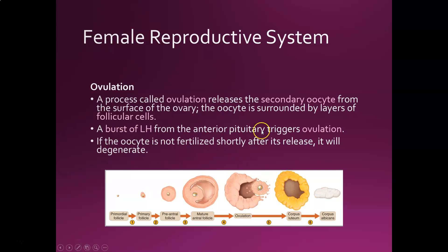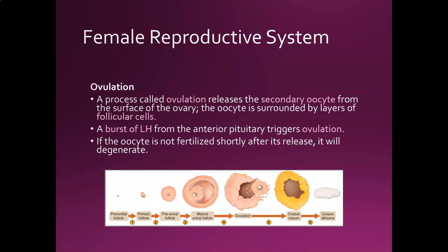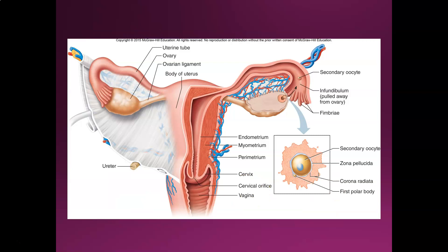A burst of luteinizing hormone from the anterior pituitary triggers ovulation — it's called luteinizing hormone because it causes the formation of the corpus luteum, and 'luteo' means yellow. The oocyte is released and starts traveling down the fallopian tubes. If it's not fertilized shortly after release — really within days — it doesn't remain viable past that point and will degenerate, leaving no possibility of fertilization.